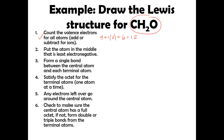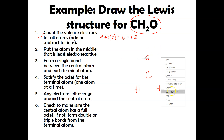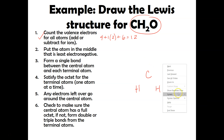Step two: put the atom in the middle that is least electronegative. Hydrogen is always going on the outside. Electronegativity increases as you go right — oxygen is further right than carbon — so carbon's going in the middle again. Carbon goes in the center and I'll position my hydrogens and oxygen around it. Step three: form single bonds — one, two, and three. Now we have six electrons in our picture.